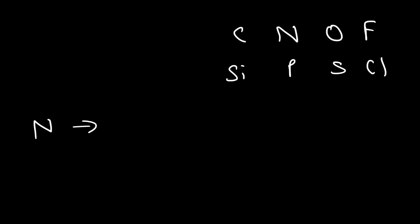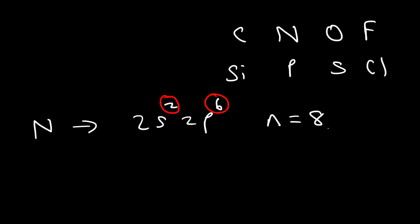Some molecules have more than eight electrons. Second-row elements like carbon, nitrogen, oxygen, and fluorine cannot have more than eight electrons — they cannot have an expanded octet, though they can have an incomplete octet. The reason is that in the second energy level, you only have the 2s and 2p sub-levels, giving a maximum of eight electrons. Elements below them — like silicon, phosphorus, sulfur, and chlorine — can have an expanded octet because in the third energy level you have the 3s, 3p, and 3d sub-levels, allowing up to 18 electrons.